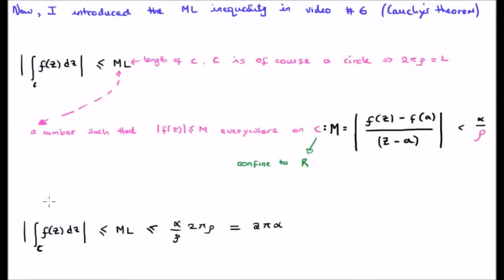This means that the absolute magnitude of the integral is less than or equal to ML which is less than or equal to alpha over rho which is M multiplied by twice pi times rho which is L, or it's twice pi times alpha. That is the maximum value of the integral. It is bounded of course we know that.